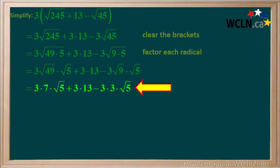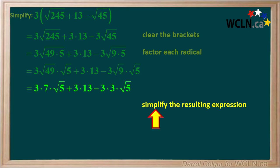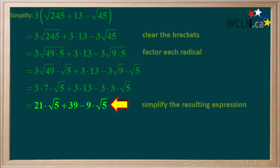So now we are left with this expression, and the next step is to simplify it. 3 times 7 is 21, 3 times 13 is 39, and 3 times 3 is 9. After simplifying, we are left with this expression.